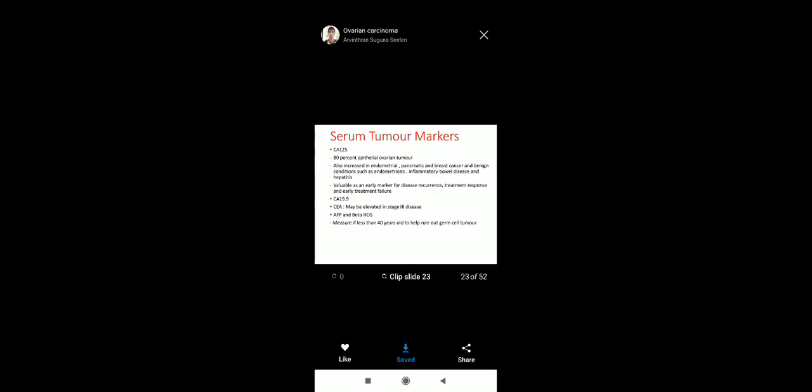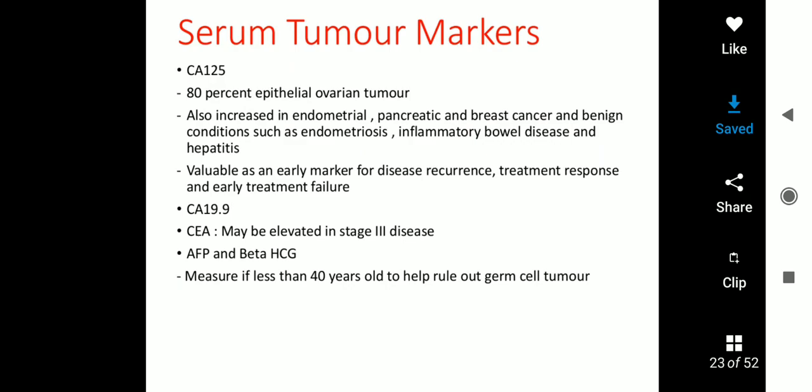Serum tumor markers: CA-125 is elevated in 80% of epithelial ovarian tumors, and also increased in endometrial, pancreatic, and breast cancer, as well as benign conditions such as endometriosis, inflammatory bowel disease, and hepatitis. It is valuable as an early marker for disease recurrence, treatment response, and early treatment failure. CA-19.9 and CEA may be elevated in stage 3 disease.